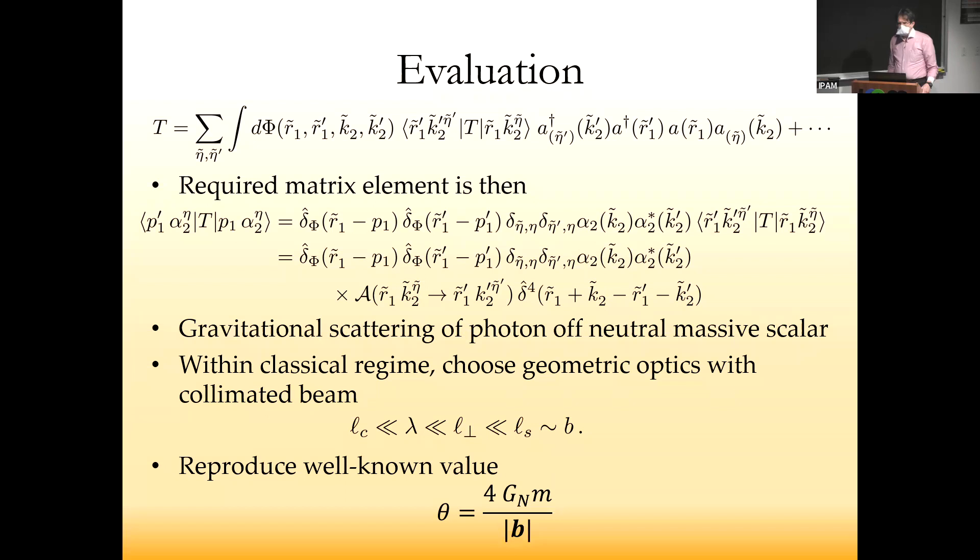The matrix elements of the T in a state of definite messenger number—that's something we know. It's just the amplitude. You have to be a little careful about crossing to keep track of where helicities are going. Once you do that, everything is fine. For light deflection, we want gravitational scattering of a photon off a neutral massive scalar.